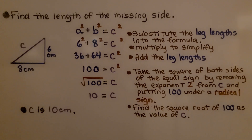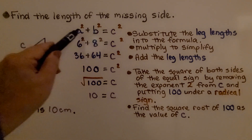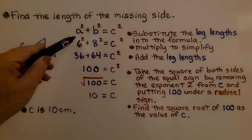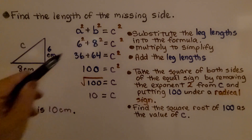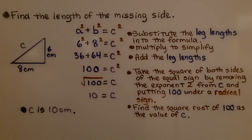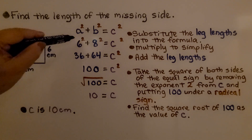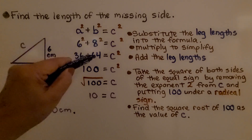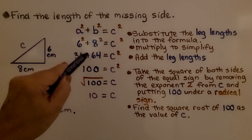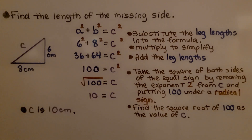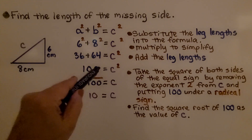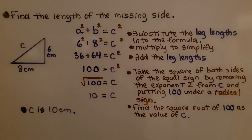Here we need to find the length of the missing side — we're missing c. Using the Pythagorean theorem a² + b² = c², we substitute the leg lengths into the formula: 6² + 8² = c². Simplifying, 6² is 6 × 6 = 36, and 8² is 8 × 8 = 64. So 36 + 64 = c², and 36 + 64 is 100, so c² = 100.